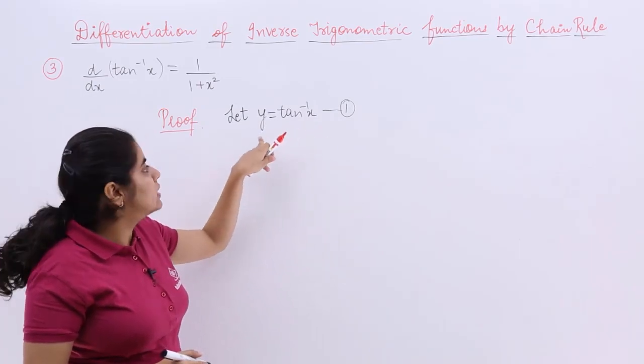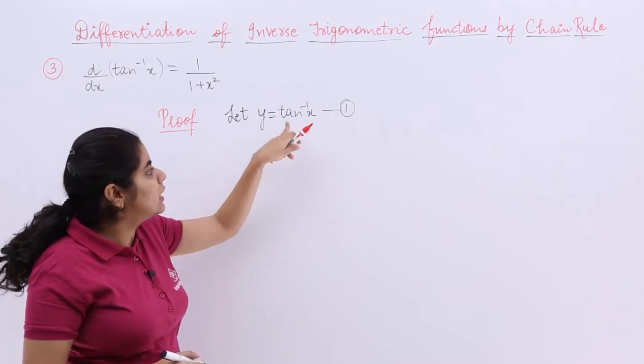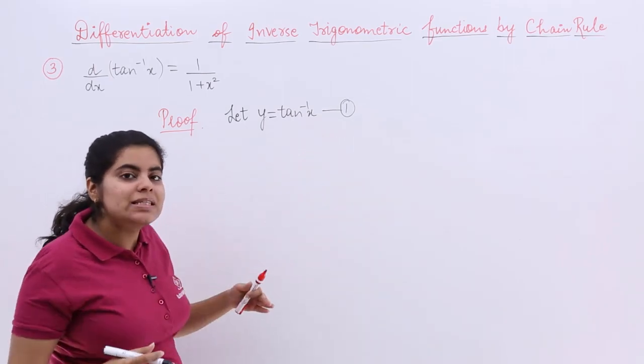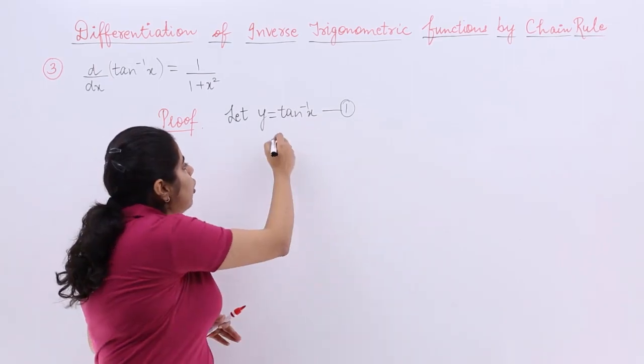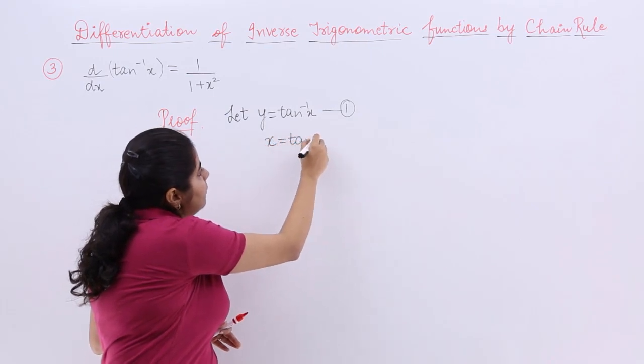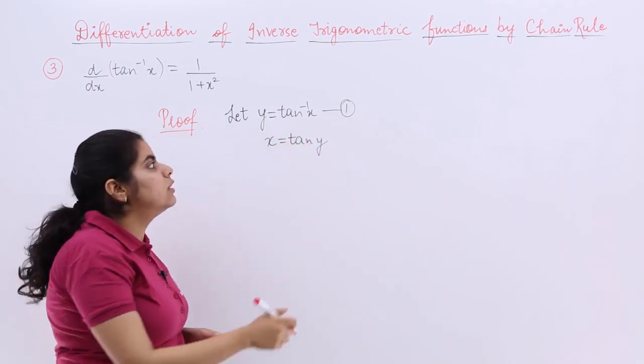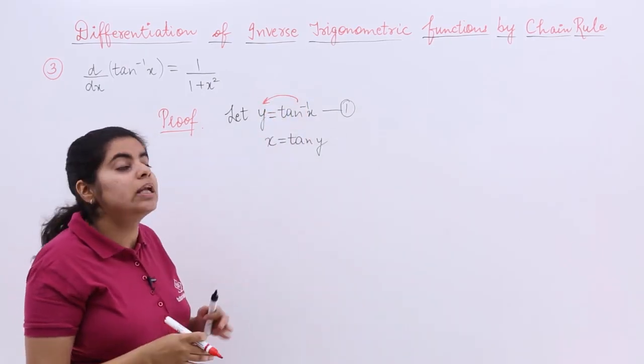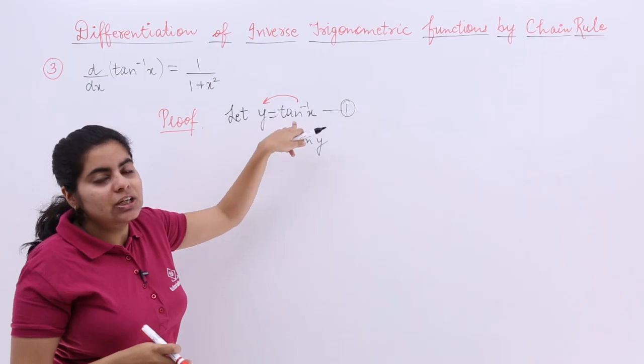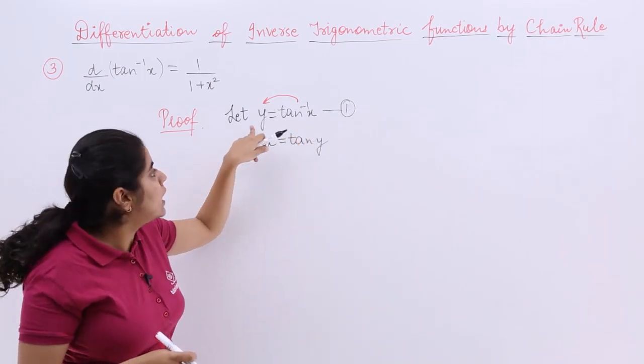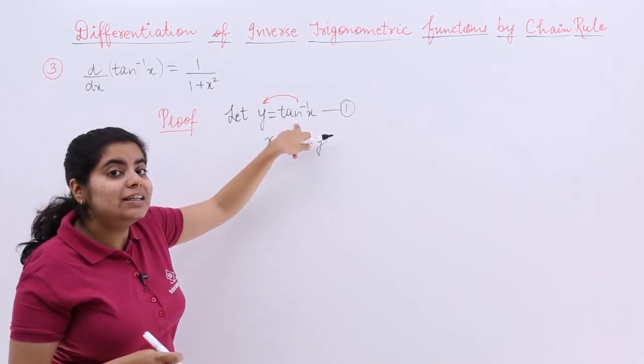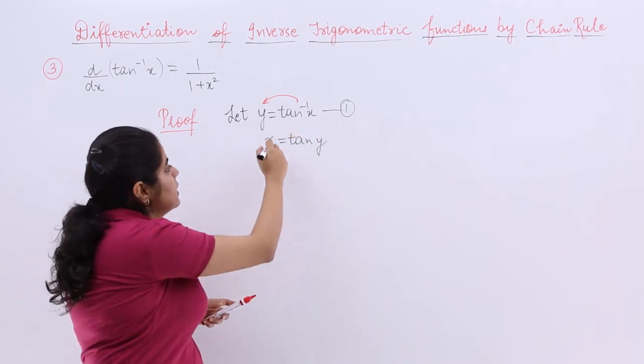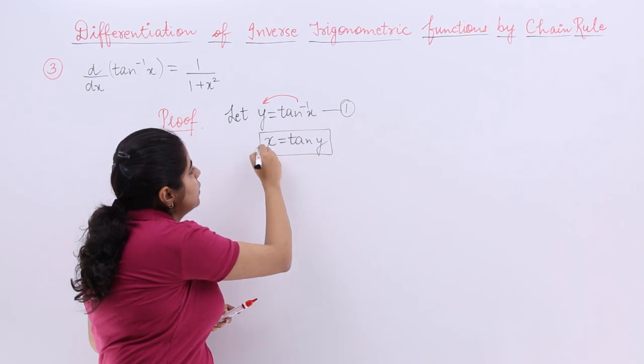Taking tan both sides, this becomes tan y, this becomes tan tan inverse x, and tan and tan inverse basically nullify each other. So this becomes x equals tan y. Some students move the tan directly, but internally you take tan on both sides. This becomes tan y, this becomes tan tan inverse x, and they nullify each other. Keep it in a box, name it equation number 2.